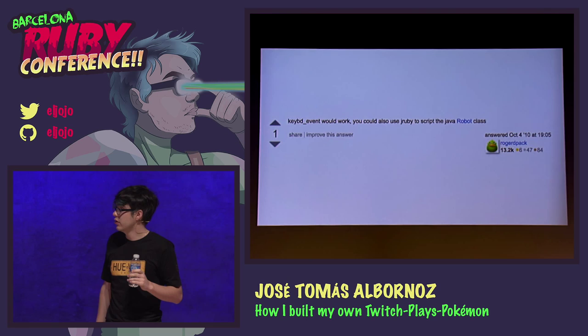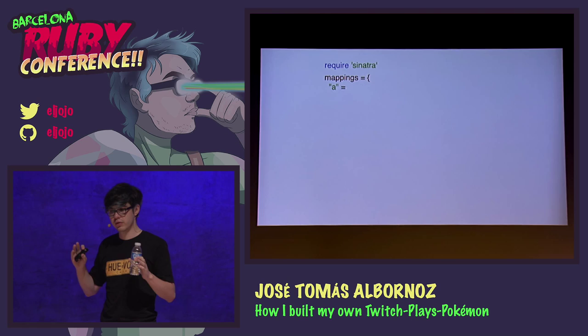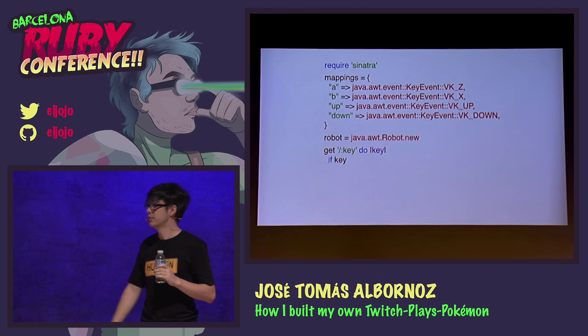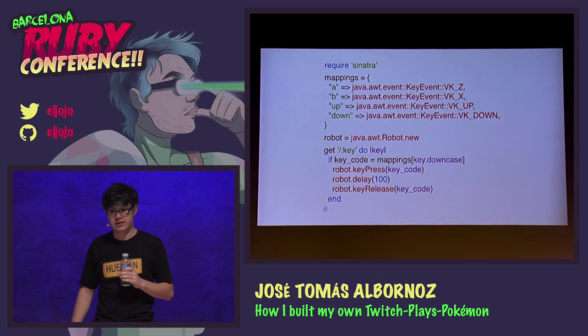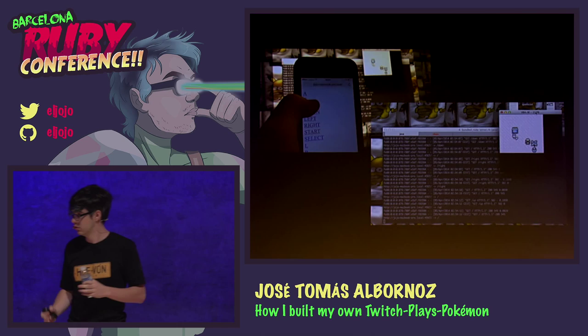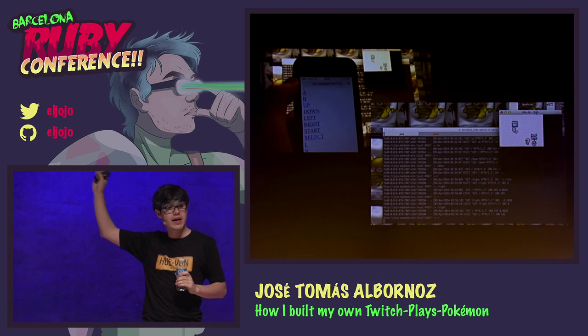I scrolled a bit more and found that you could use JRuby to use the Java Robot class to control the keyboard. I had some experience porting code from Java to JRuby, so by the end of the day I had a working emulator and a working Sinatra application that could send keystrokes as if I was pressing keys on my computer. Here you can see it working — just some Java bindings, and whenever I send a request to a specific URL, it will just press the key. On the left side you can see me sending HTTP requests from my iPhone to the Sinatra application, and on the right side you can see Sinatra actually controlling the Game Boy emulator.